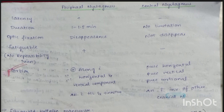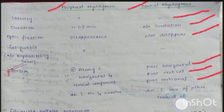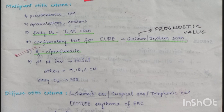Difference between peripheral and central nystagmus: Central nystagmus has no latency, no duration limitation, optic fixation does not suppress it, and it has pure horizontal, pure vertical, or pure torsional components associated with other cranial nerve involvement. In peripheral nystagmus, latency is present (1 to 1.5 minutes), duration disappears, optic fixation causes disappearance, fatigability is present, no repeatability, and it is associated with hearing loss and tinnitus.